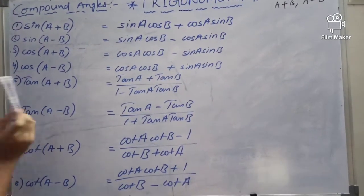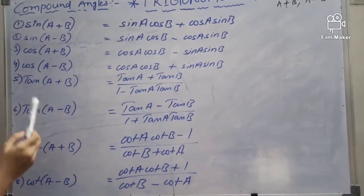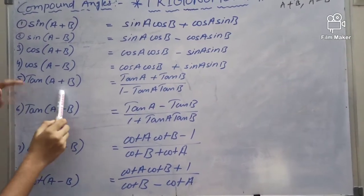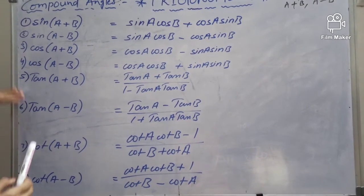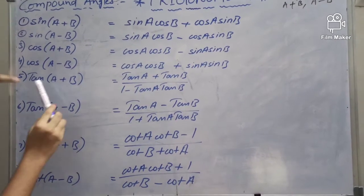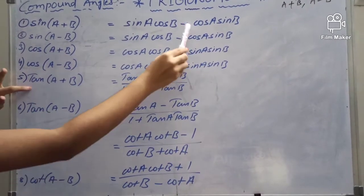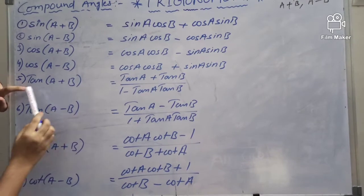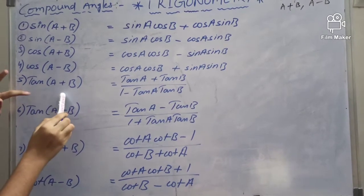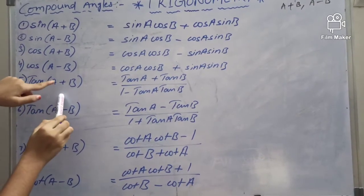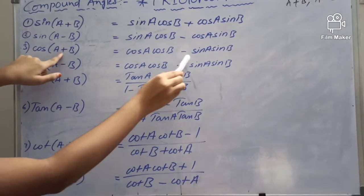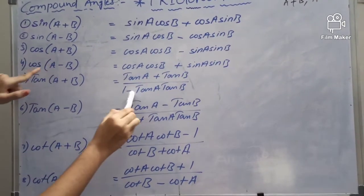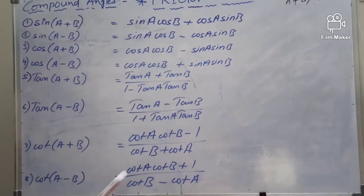Now, tan A plus B: tan A plus B equals sin A plus B divided by cos A plus B. In the numerator, sin A plus B gives a plus. In the denominator, cos A plus B gives a minus.